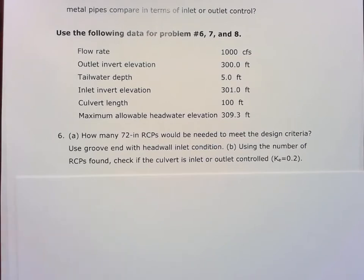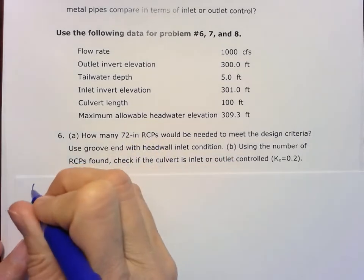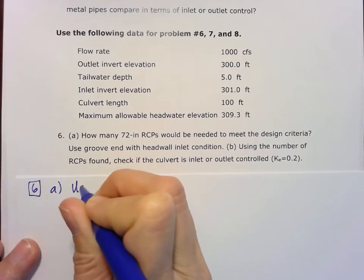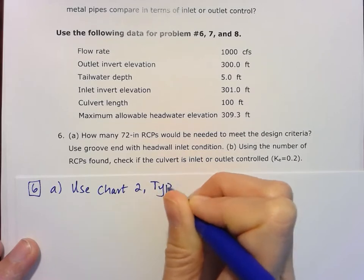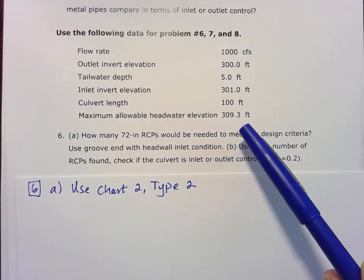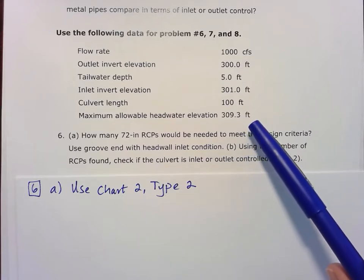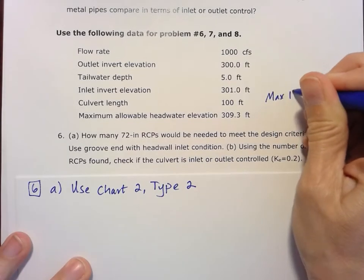So first thing we need to do is figure out how many pipes we're going to need. We know that we've got reinforced concrete pipe and we've got that grooved end with headwall control. So we are going to go ahead and use chart two, and this is going to be type two with that type of entrance. And so what we're going to do is just go through all these possible scenarios, and we have to make sure that we check and make sure we're not exceeding our maximum allowable headwater condition.